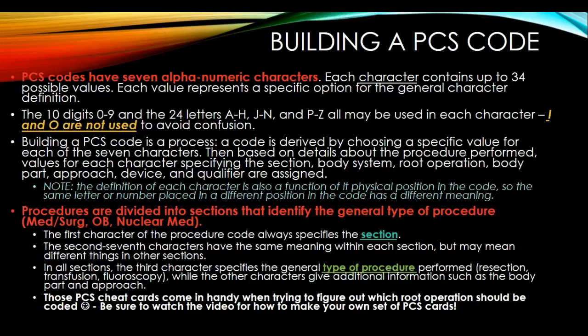The first character of the procedure code always specifies the section — for example, whether it's medical surgical, obstetrics, or nuclear medicine. The second through seventh characters will have the same meaning within each section, but may mean different things in other sections. In all sections, the third character specifies the general type of procedure performed, such as a resection, transfusion, or fluoroscopy.